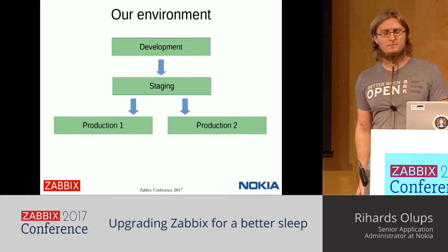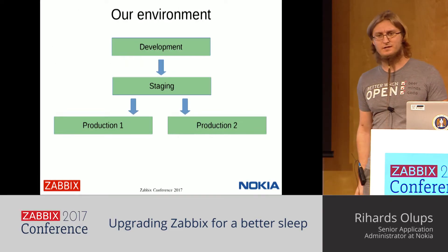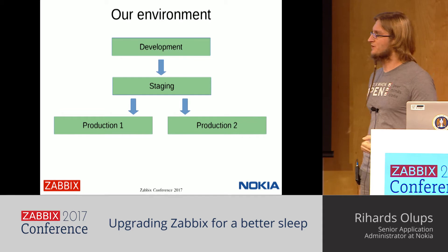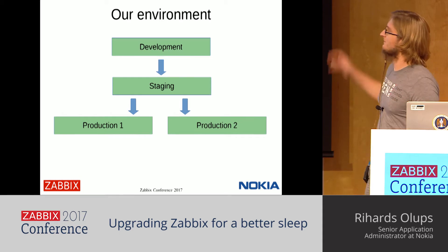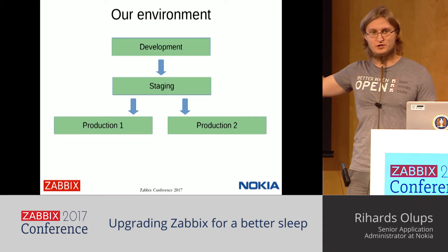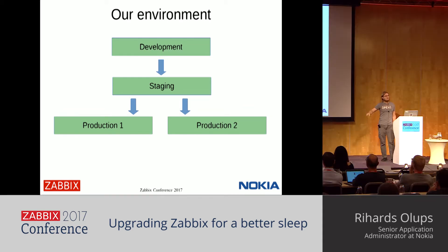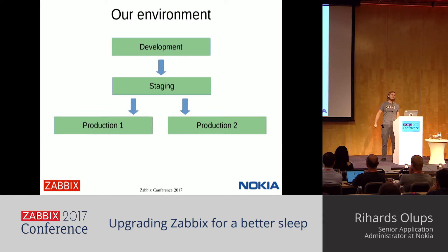Our environment is split into several major sections. We have development, staging, and then production. Changes are supposed to be implemented in the development environment first, especially bigger changes like a major Zabbix version upgrade.